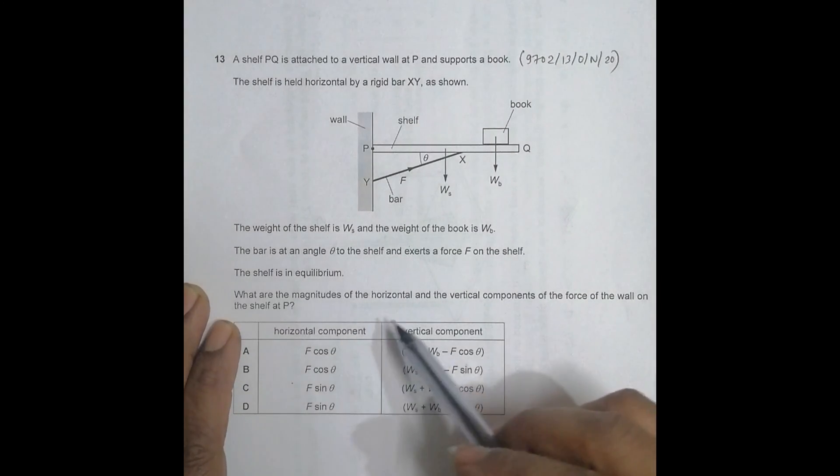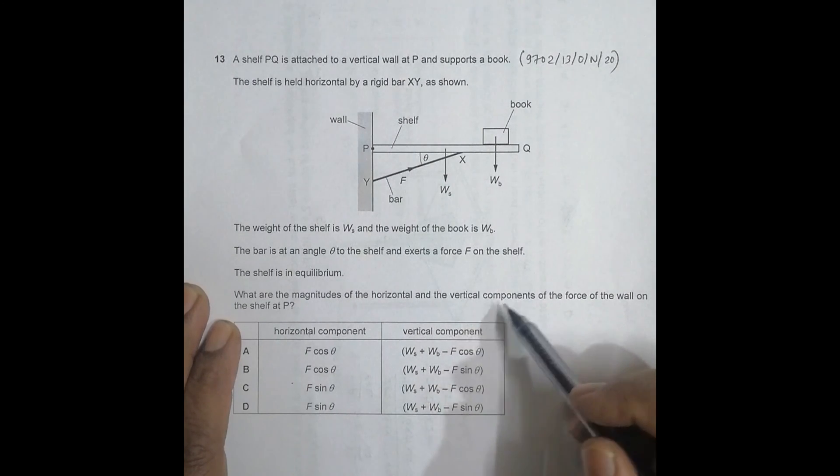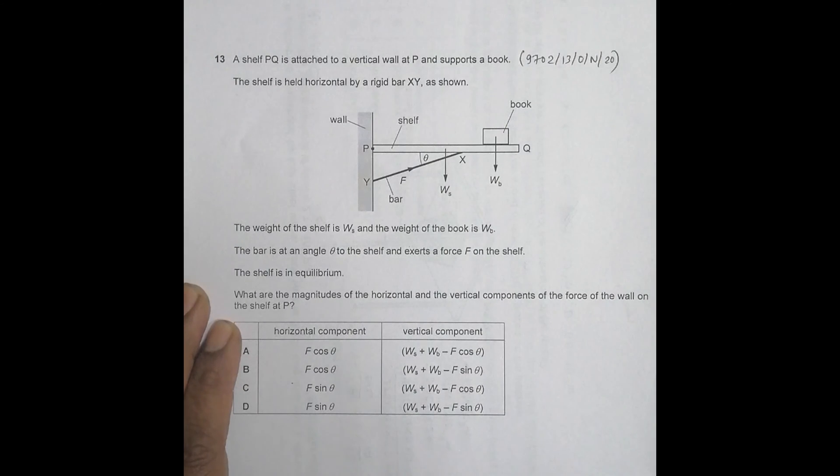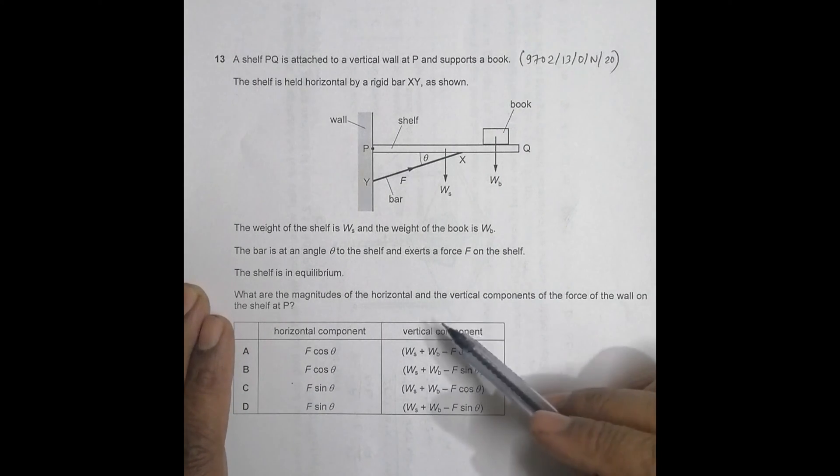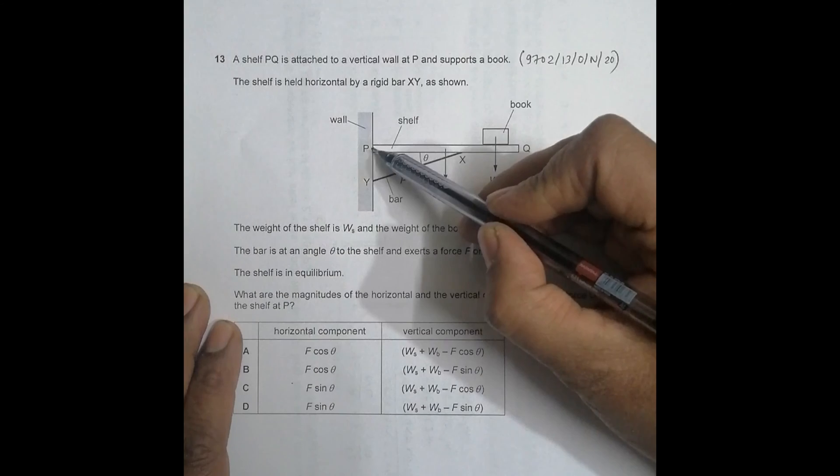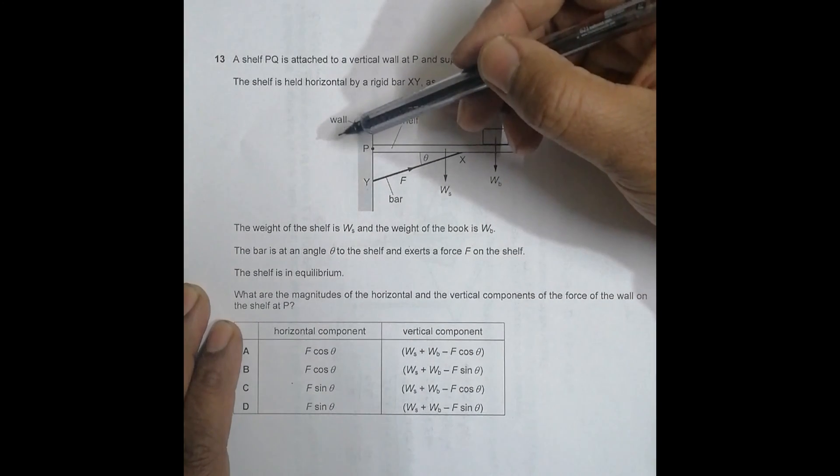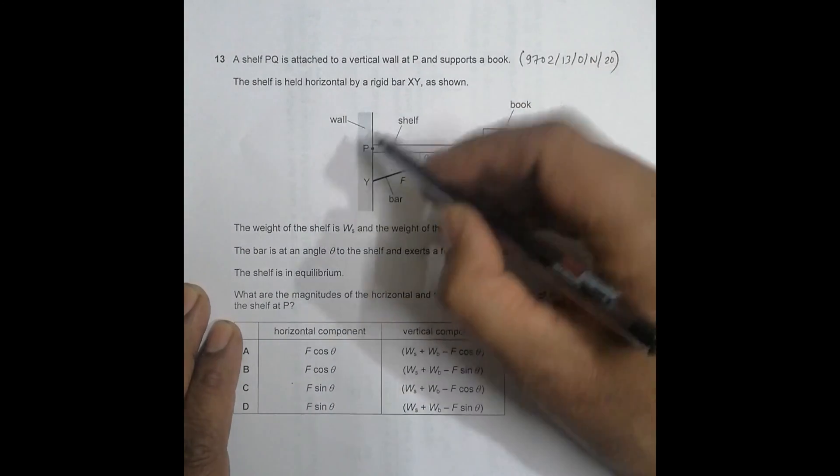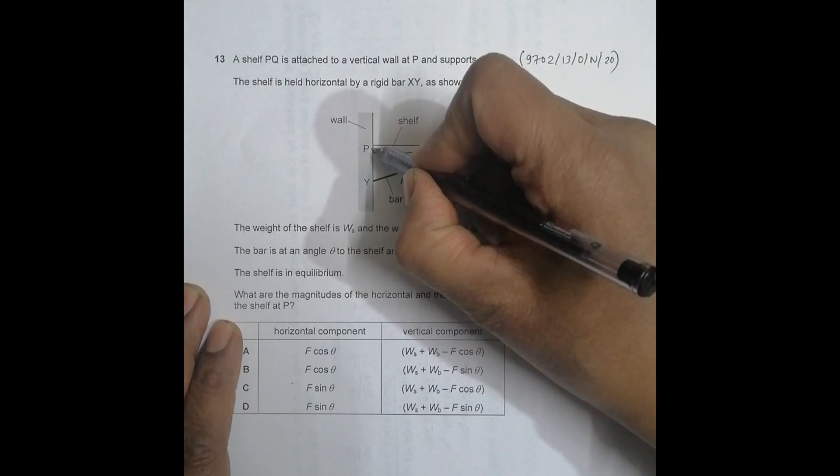What are the magnitudes of the horizontal and the vertical components of the force of the wall on the shelf at P? So we have to find the horizontal and vertical components of the force of the wall on the shelf at P.